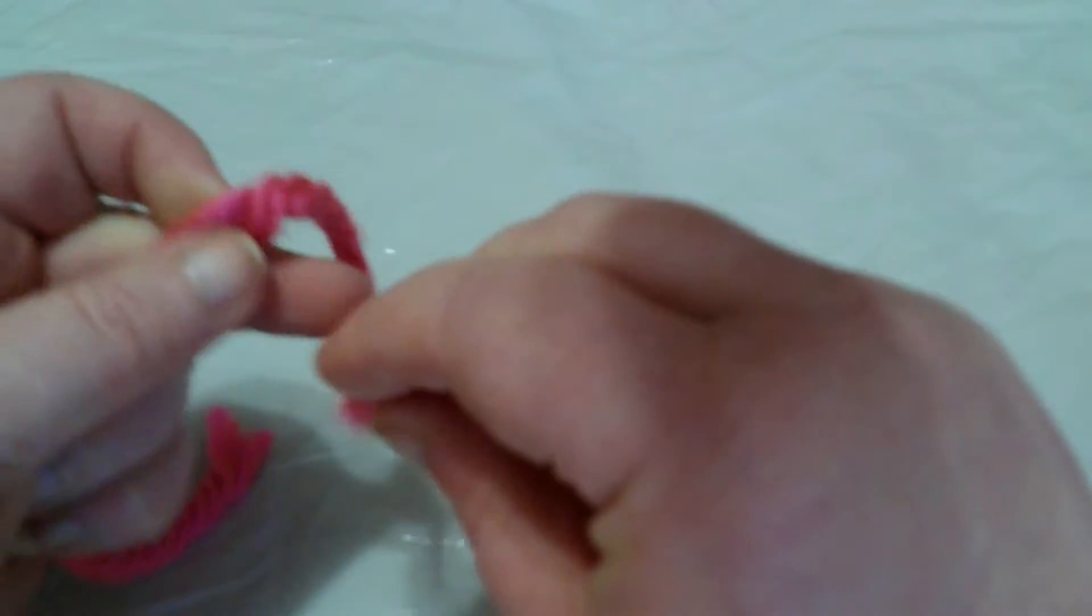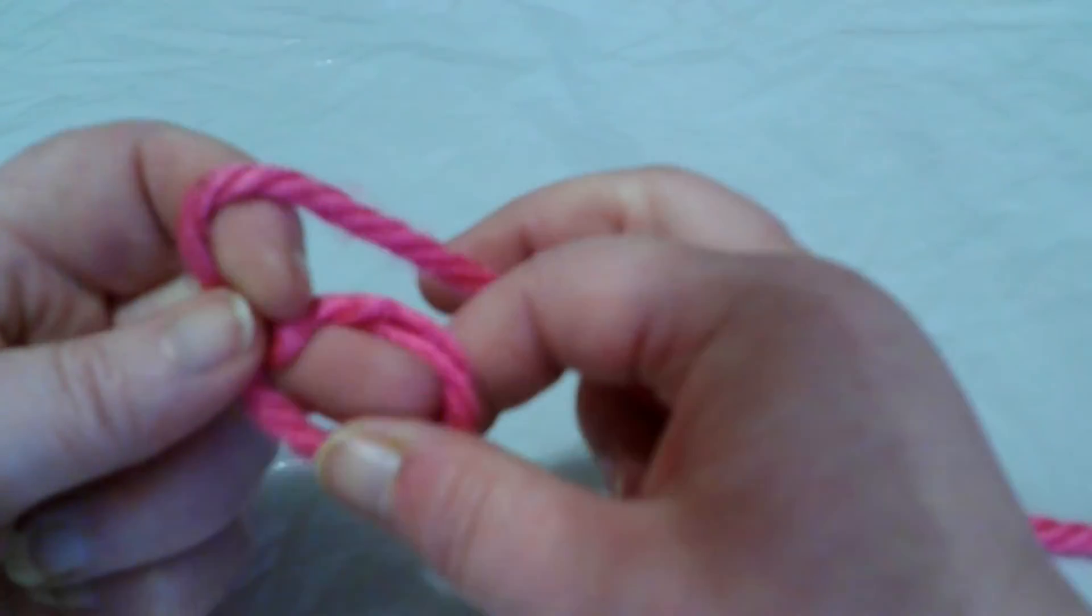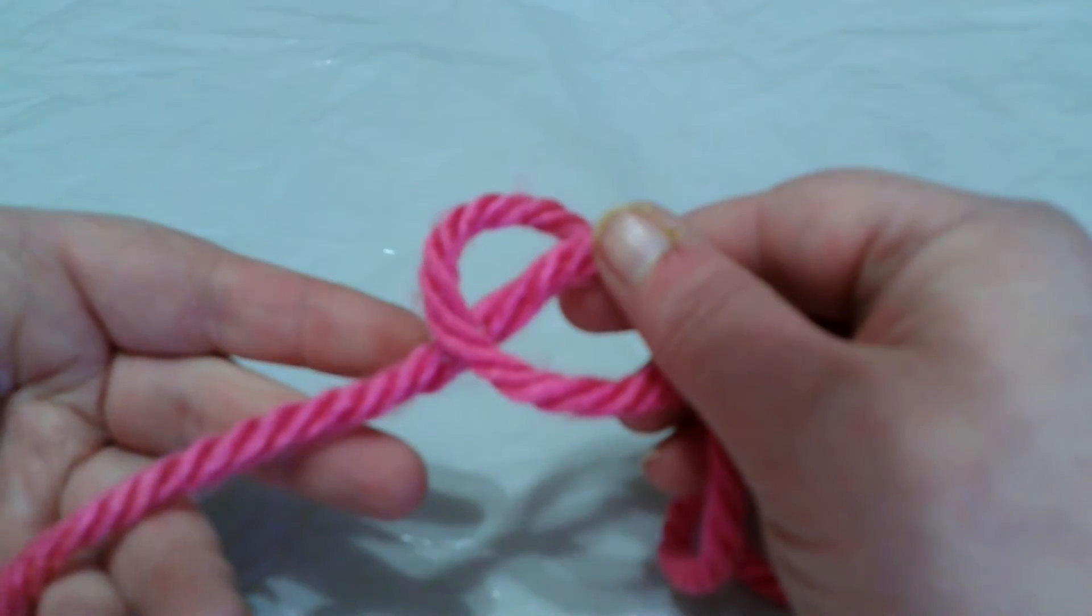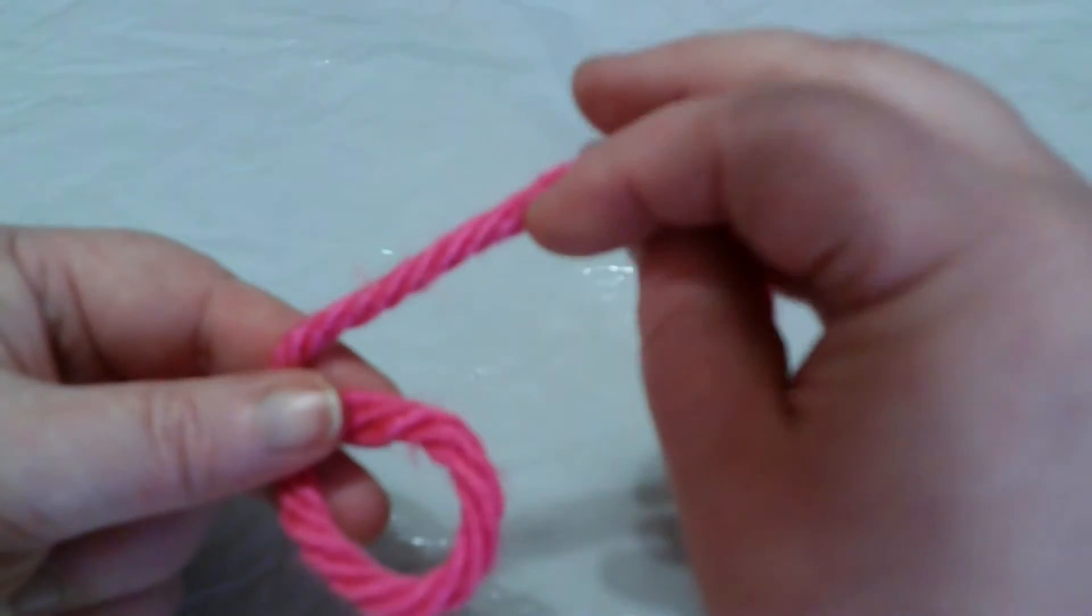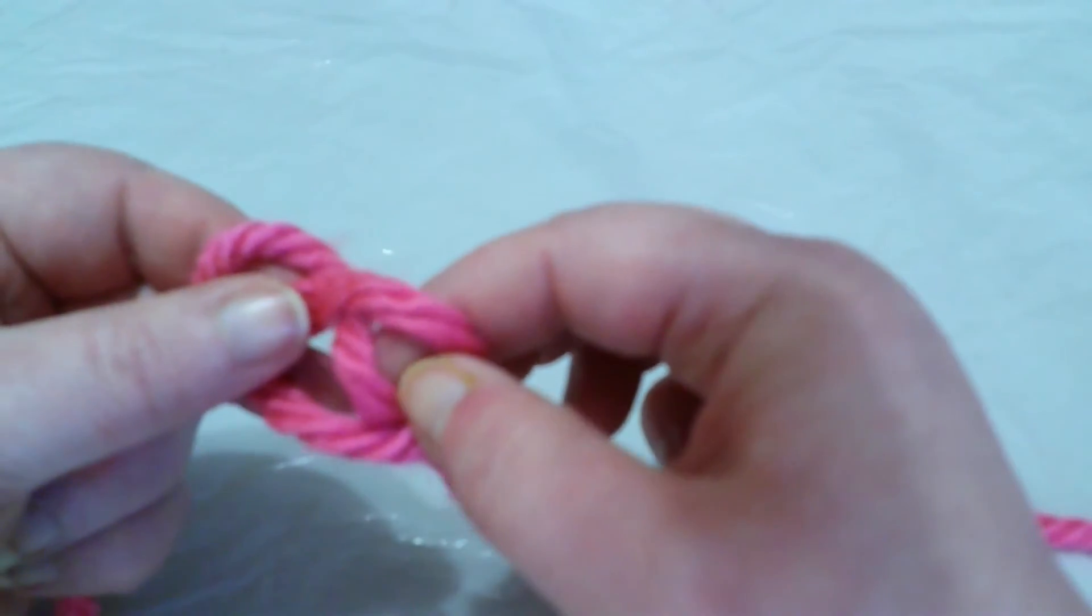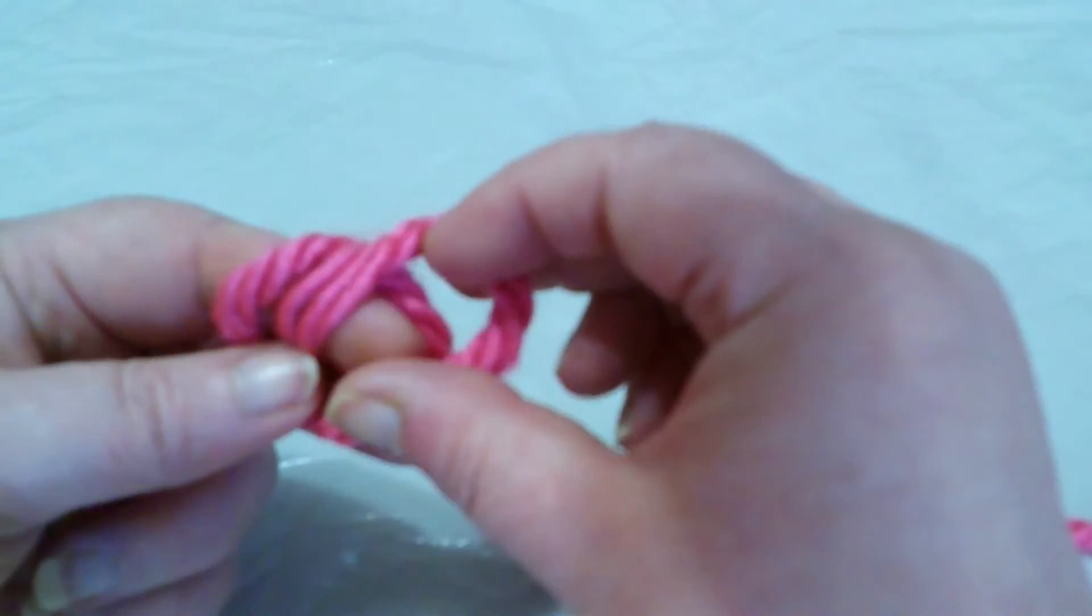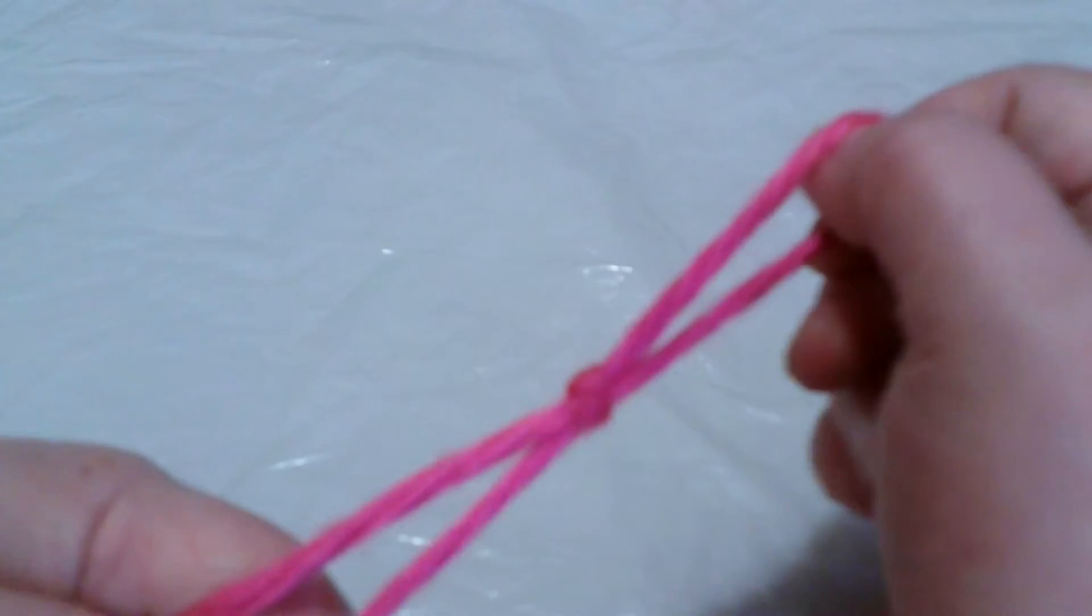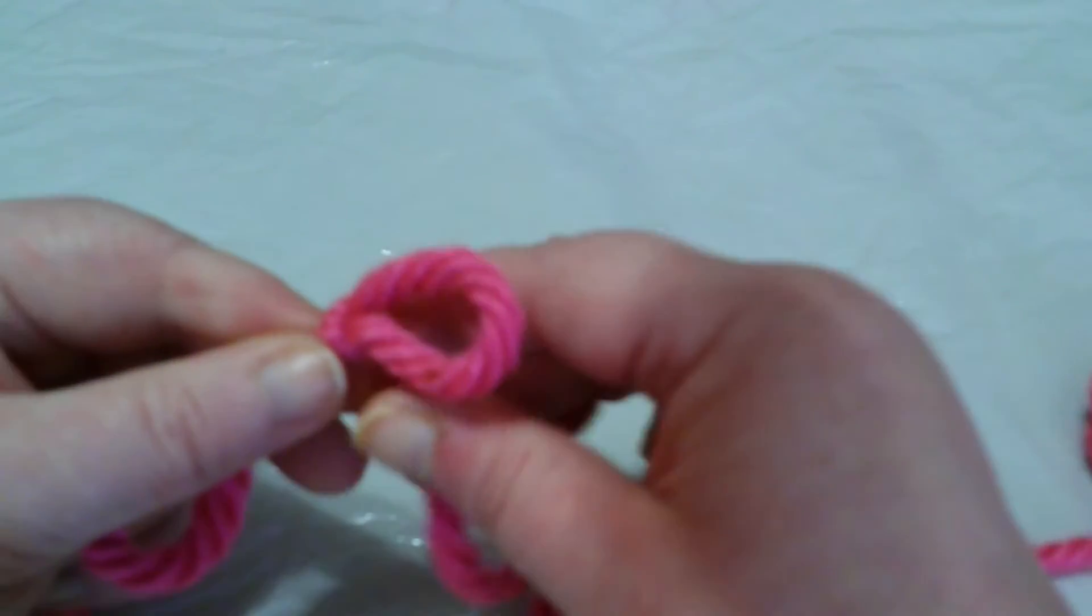So take your right hand, go on top of the left yarn like this, you see? Okay. And then what's in your right hand, you're going to pull it through the circle like this, and then pull it out, tighten it, and then you adjust it.